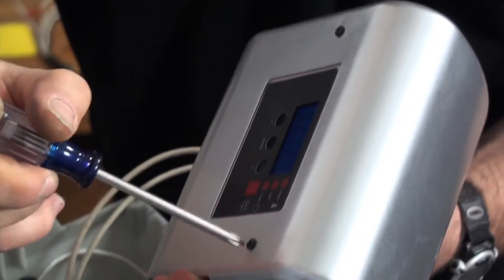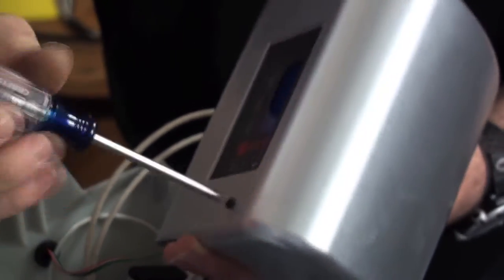Now using a number one Phillips screwdriver unscrew the control board from the top control housing. You'll need to hold the small nut on the end of the screw while performing this step. Be careful not to lose the nuts.